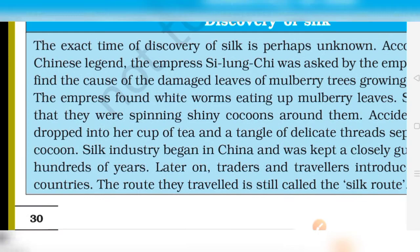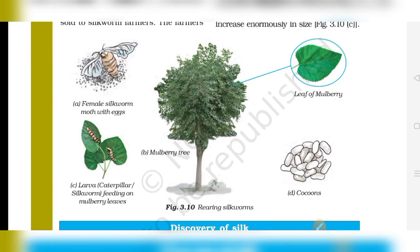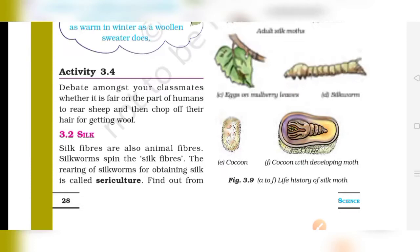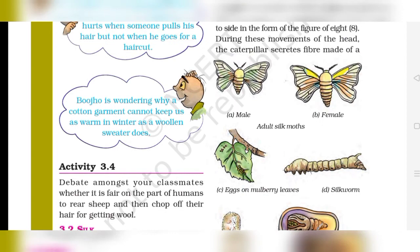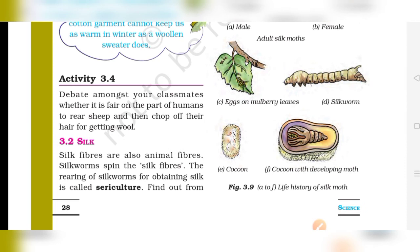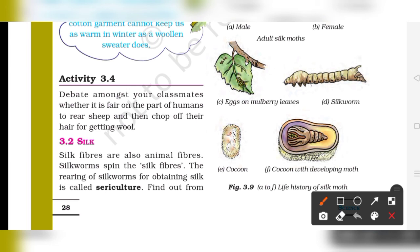Look at page number 30 in your NCERT book where there is a diagram about rearing silk moths. And on the previous page, page 28, the life stages are given — the life history of the silk moth. First there are eggs on the mulberry leaves, then the silkworm forms, then the cocoon, and then the cocoon with developing moth. You need to draw the two stages directly related to silk production.